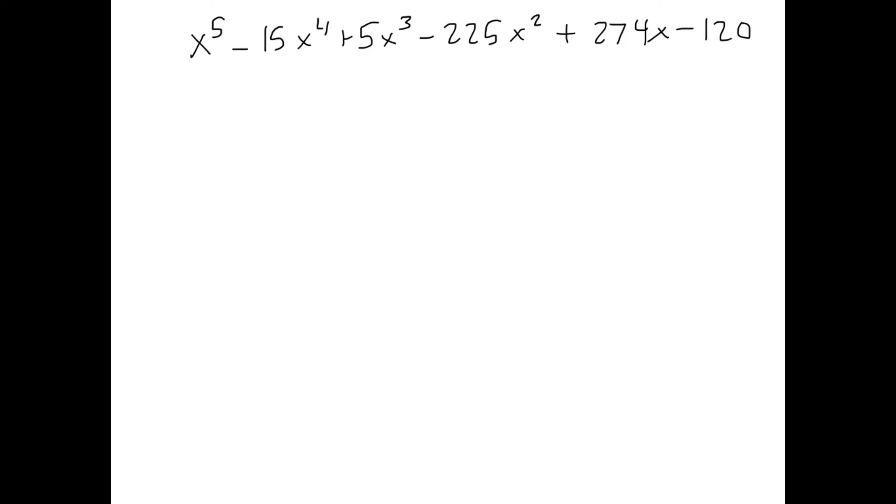This polynomial, as it's written, is in standard form. Again, we want to change it to nested form. So let's take a look at these terms. Again, all of them have an x in common. We can factor out an x. So we can rewrite this as x to the 4th minus 15x to the 3rd plus 5x squared minus 225x plus 274, all multiplied by x, we still have our minus 120.